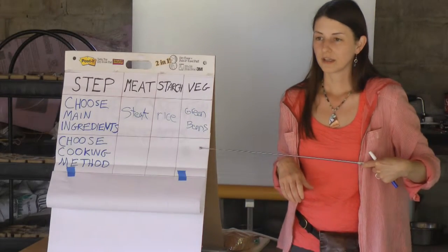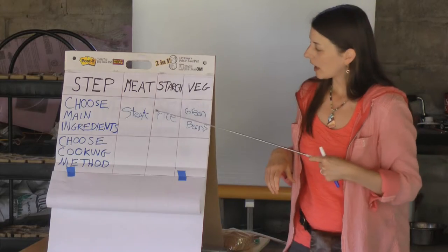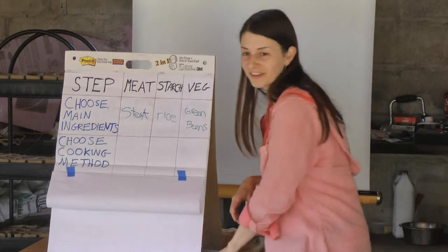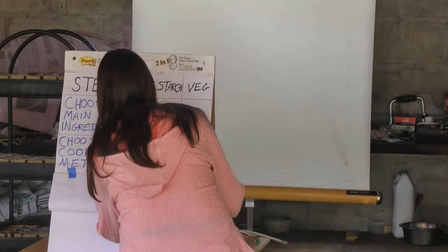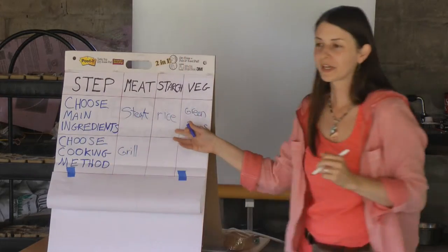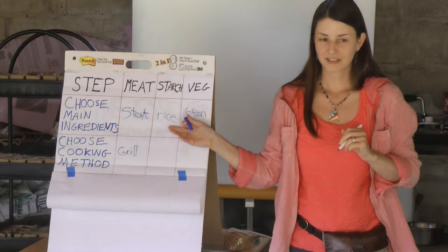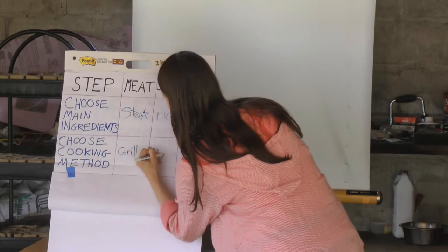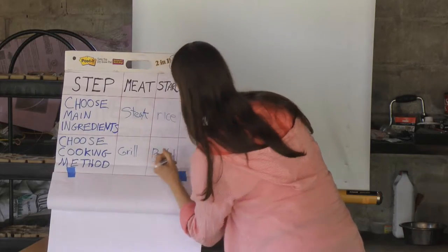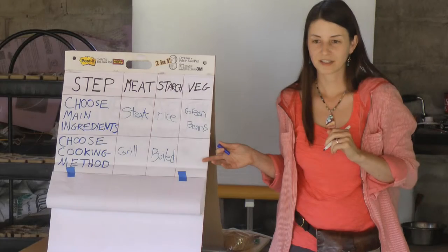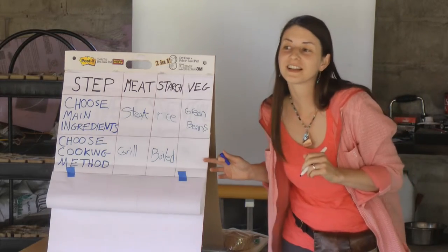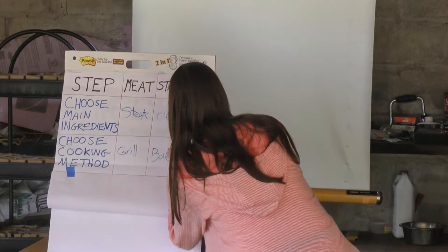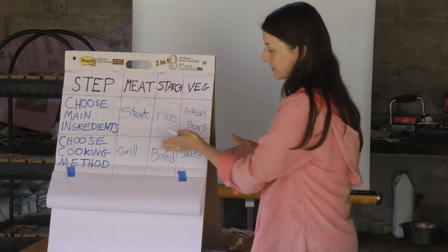Let's talk about cooking methods. How are you going to cook the steak? Grilled. How are we going to cook the rice? Boiling — boiled. How about the green beans? Sauté. So that's the next level of detail.